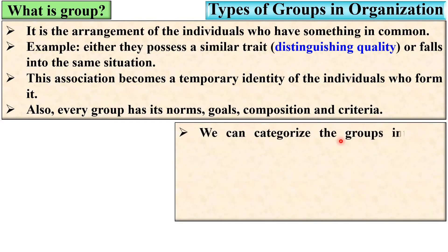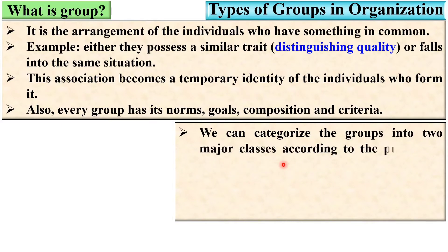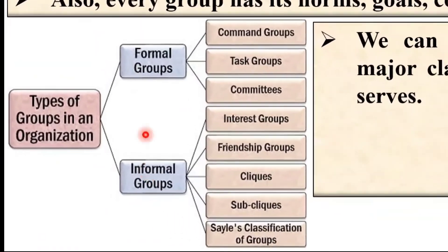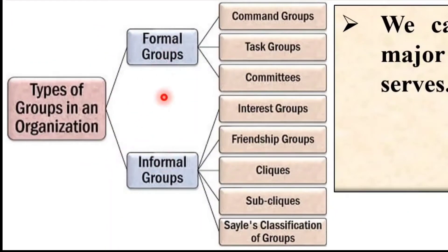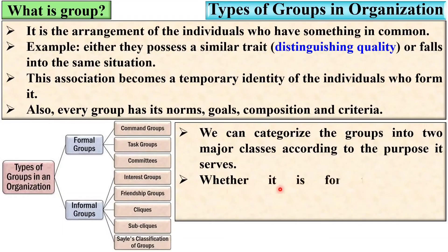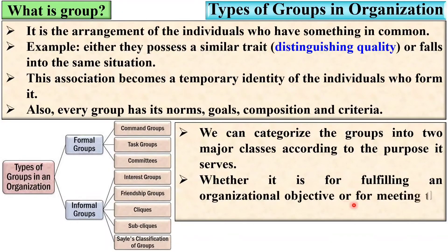We can categorize groups into two major classes according to the purpose they serve — the formal group and the informal group — whether it is for fulfilling an organizational objective or for meeting the self-interest of the members.